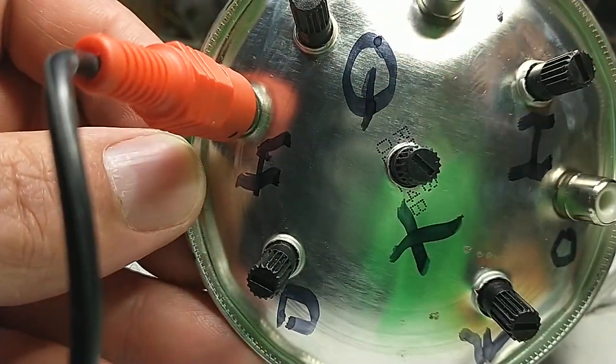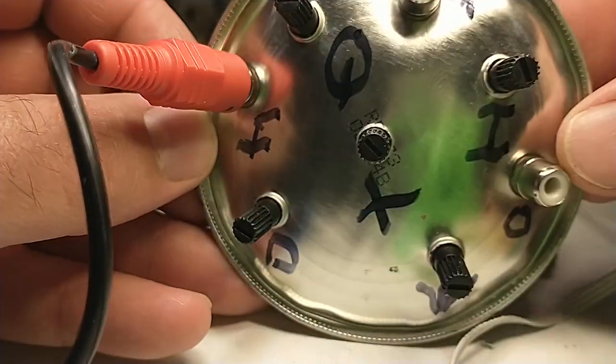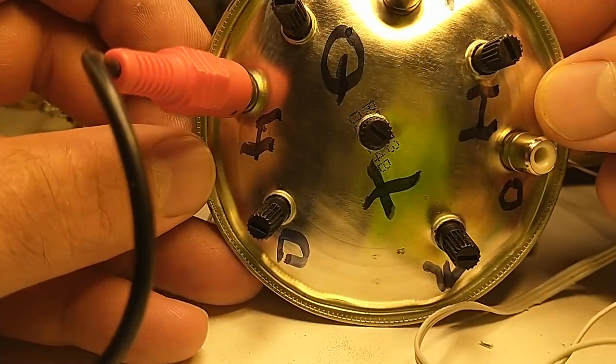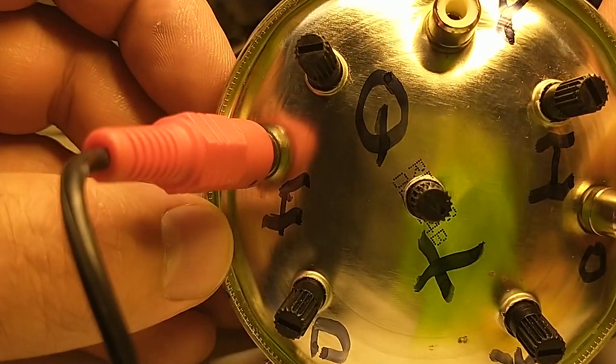Now, with the Inversion Knob turned all the way down, it's basically a nice smooth filter.